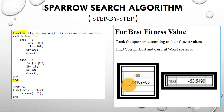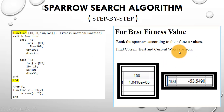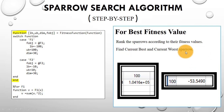We got the minimum fitness value, which is 1.0416, and the position is shown here. In this step we will display the current best and current worst sparrow. Here I display only the current best — you have to store the values for both the current best and current worst.